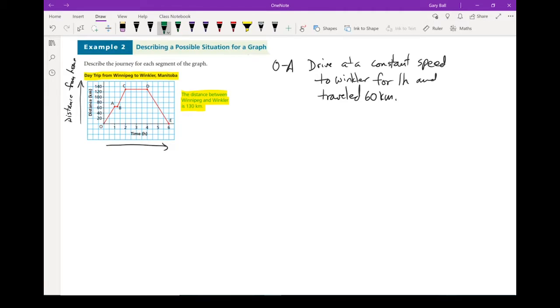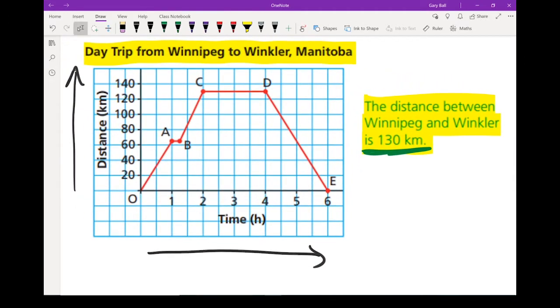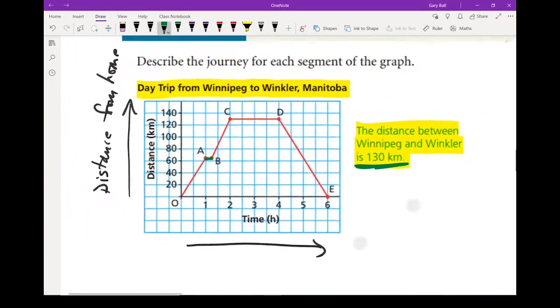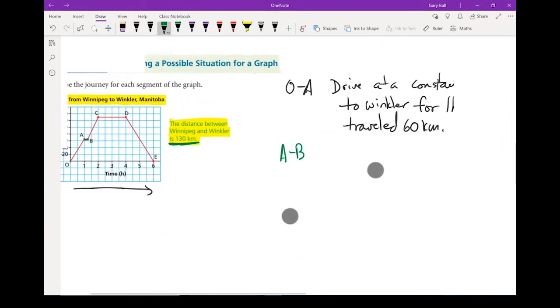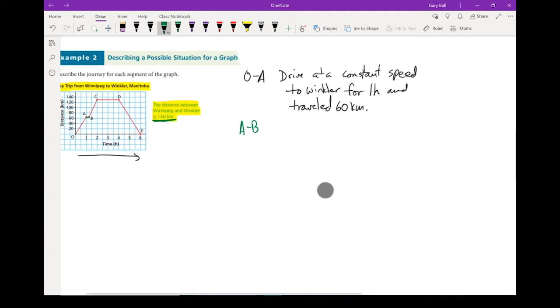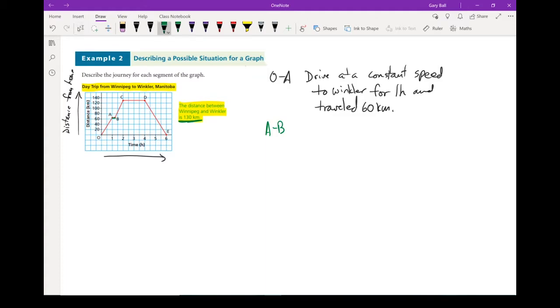Next, if we move from A to B. Now keep in mind, they didn't get there yet, because the entire distance is 130 kilometers. So if I look from A to B, time is moving forward, but the distance is not increasing. So it looks like they had about a 15-minute stop. Each space on here being half an hour, that's half of that. It appears that they had a 15-minute stop. They are not moving. So that is about a 15-minute stop.